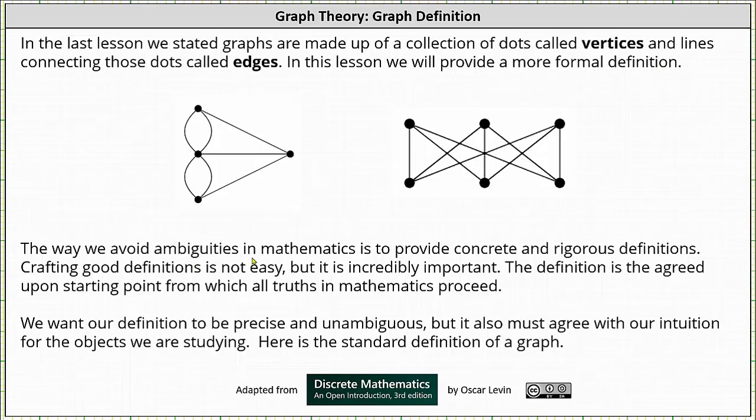The way to avoid ambiguities in mathematics is to provide concrete and rigorous definitions. Crafting good definitions is not easy, but it is incredibly important. The definition is the agreed-upon starting point from which all truths in mathematics proceed. We want our definition to be precise and unambiguous, but it also must agree with our intuition for the objects we are studying. Here's the standard definition of a graph.